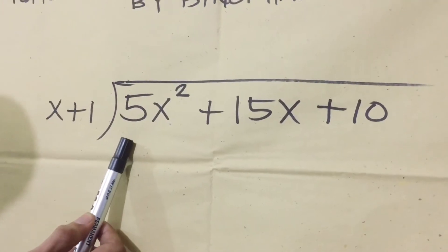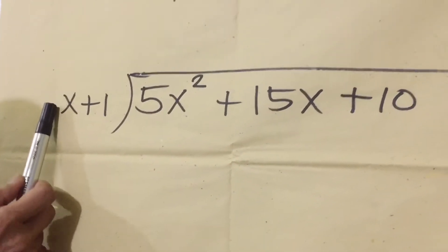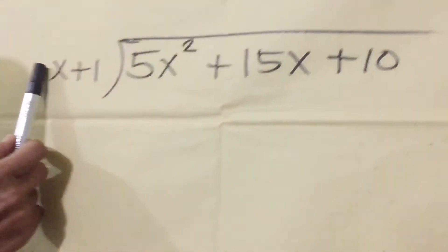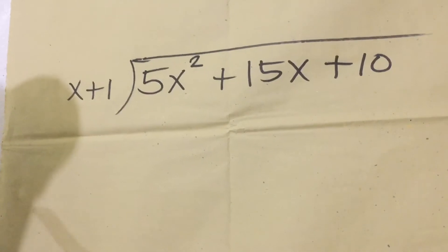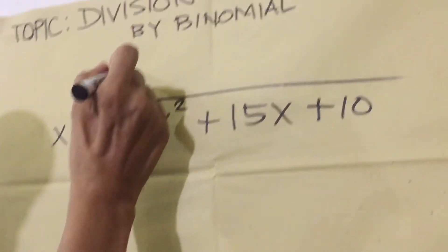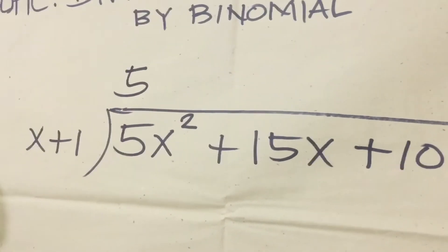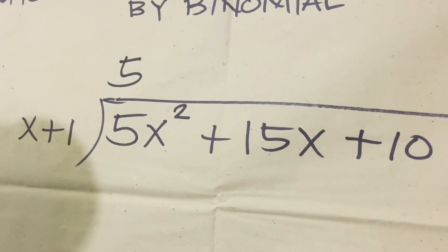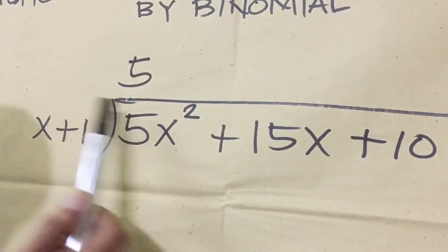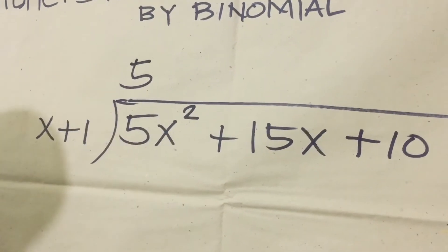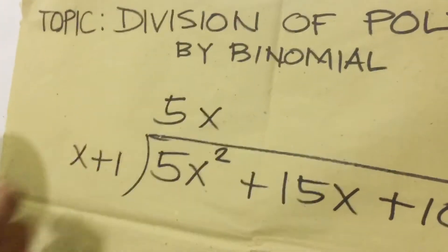First, we estimate using the numerical coefficient: five. The numerical coefficient of x is one, so five divided by one is five. Then for the variable, we subtract the exponents: x squared here, divided by x to the first power, so two minus one gives us one — meaning the result is x to the first power.